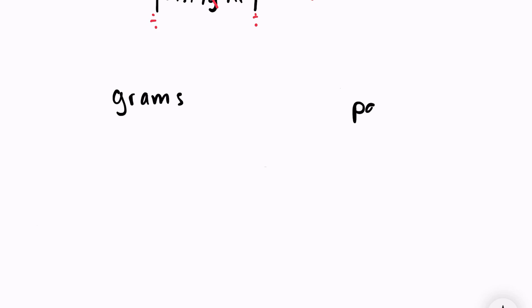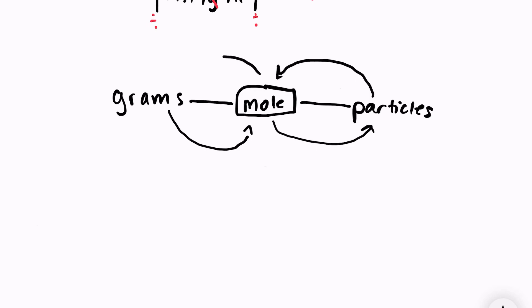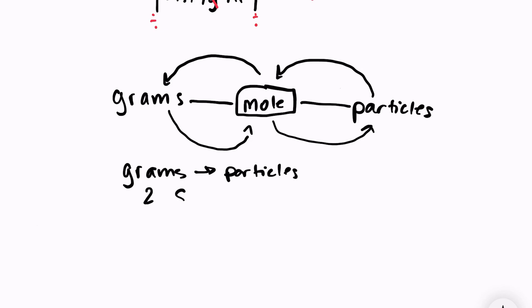One thing to note when going between grams and particles is that we have to use the mole in between — the mole is the bridge between grams and particles. If you're going from grams to particles, you first convert into moles, then into particles. Going backwards from particles to grams, you first convert into moles, then into grams. It's always a two-step conversion, and if you're only using one conversion factor, you've done something incorrectly.